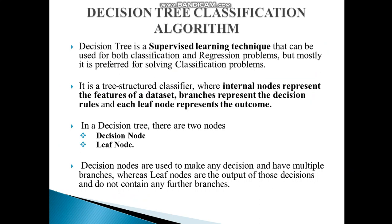It is a tree-structured classifier where internal nodes represent the features of the dataset, branches represent the decision rules, and each leaf node represents the outcome. In a Decision Tree, there are two nodes: Decision Node and Leaf Node. Decision Nodes are used to make any decision and have multiple branches, whereas Leaf Nodes are the output of those decisions and do not contain any further branches.